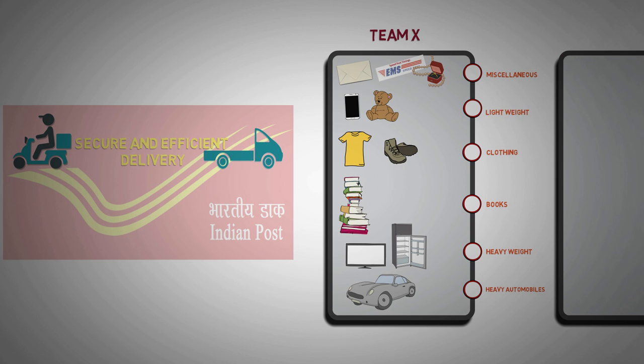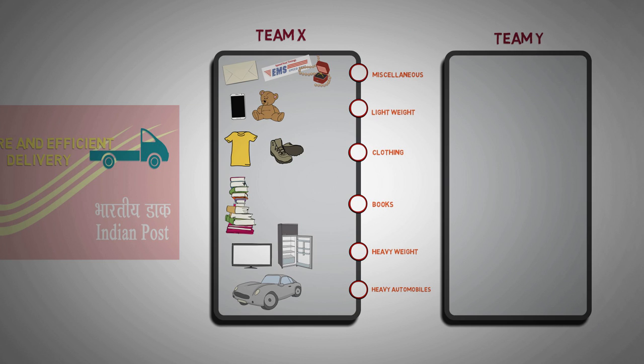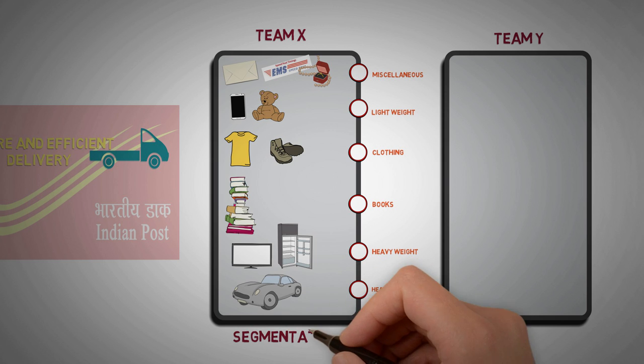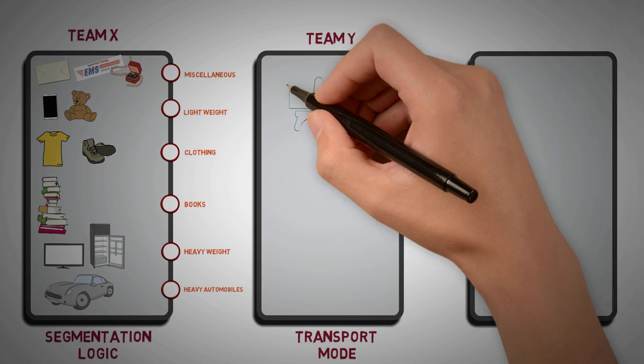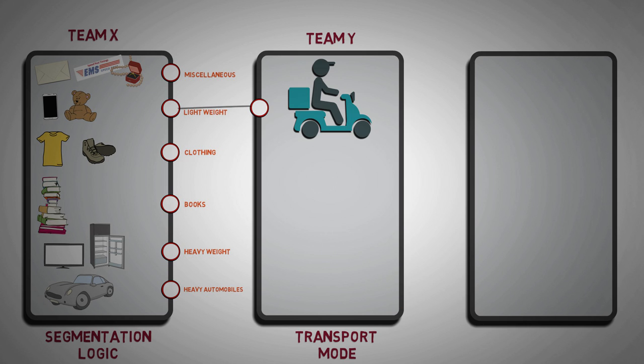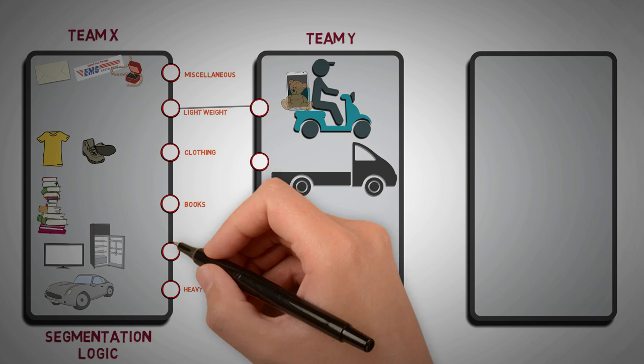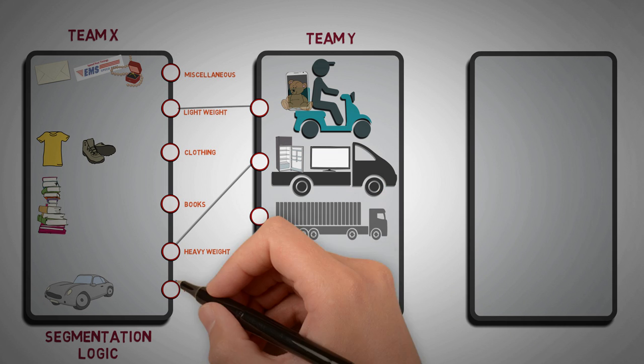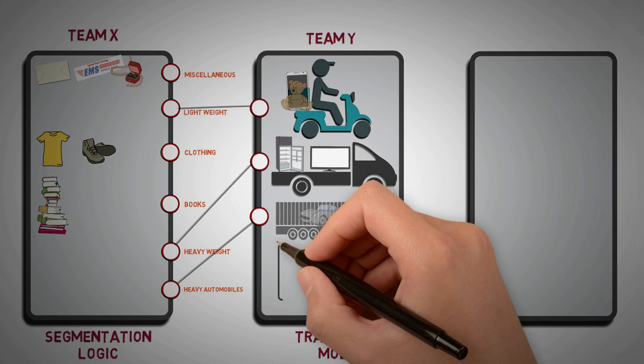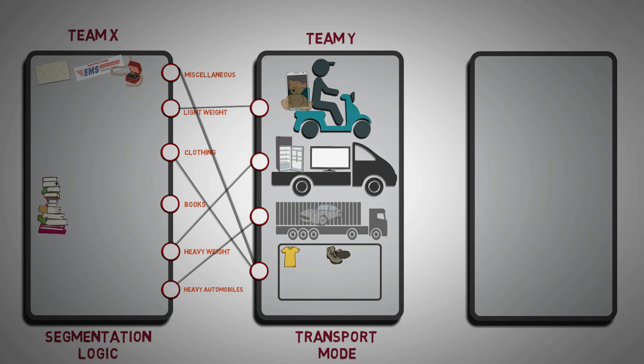Team X then hand it over to team Y. Now, based on the segmentation logic passed by team X, team Y decides the mode of transportation to be used. For example, 2 wheelers will carry lightweight goods. Trucks will carry heavy weight goods. 16 wheeler container will carry heavy automobiles. Rest categories can be mapped in a dedicated transport group.